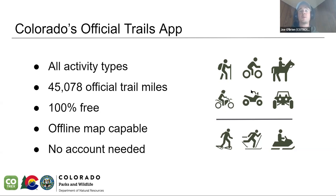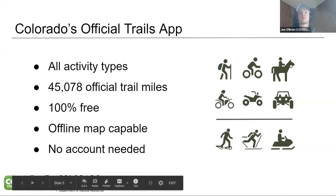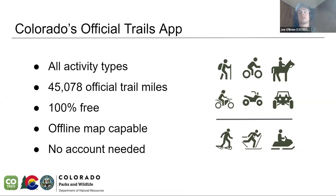We see COTREX as a public service for recreators as well as management agencies and volunteer organizations around the state. One of the really great things about COTREX is that it's offline map capable — unlike some services that ask you to pay for that as a premium feature, it's totally free to download those map blocks and use them offline. You can still do quite a lot with those offline map blocks without needing any cell service or Wi-Fi. Most of the features in COTREX don't require an account — the only time you really need an account is if you plan on saving things, like saving a custom route or recording a trip.